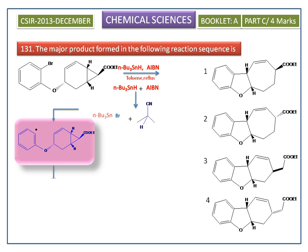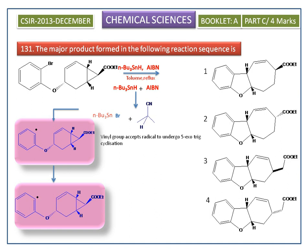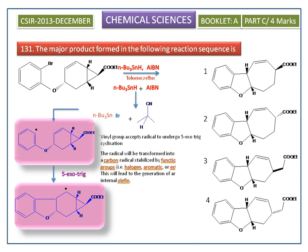This radical undergoes exo-trig cyclization. The radical is then transformed into a carbon radical stabilized by the functional group. Here you can see how the alkene is forming.